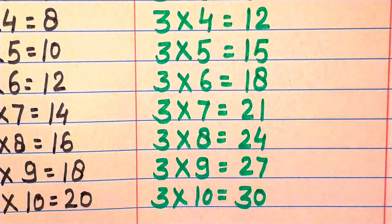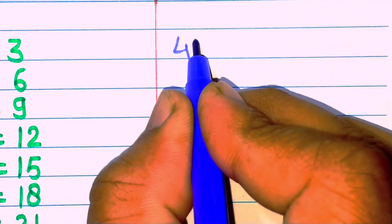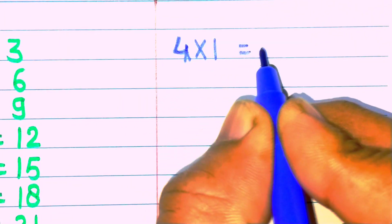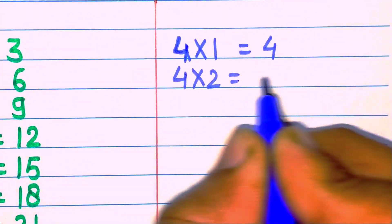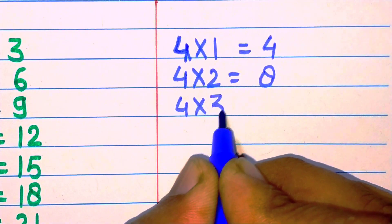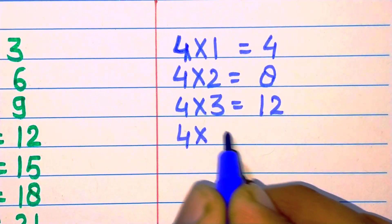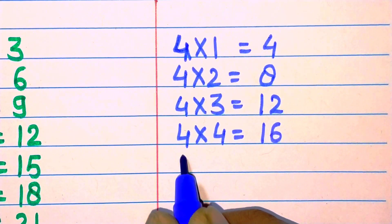Next, table of four. Four one are four, four two are eight, four three are twelve, four four are sixteen, four five are twenty.